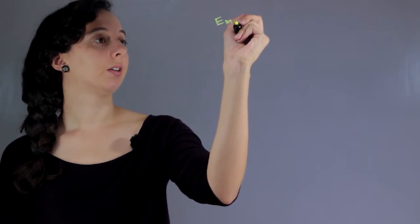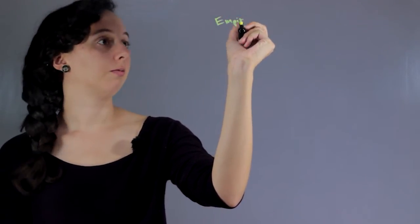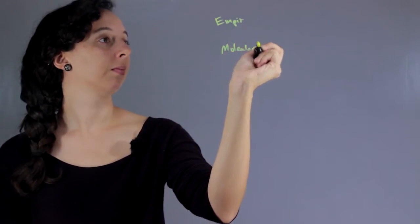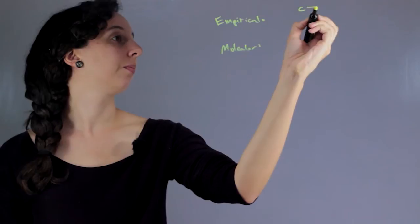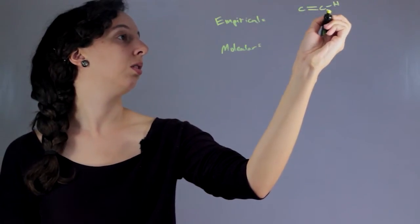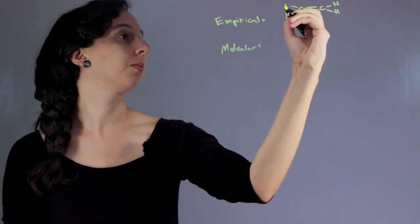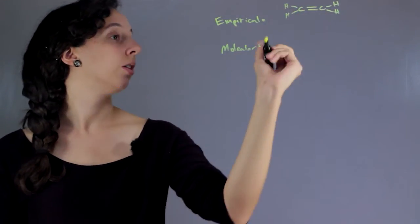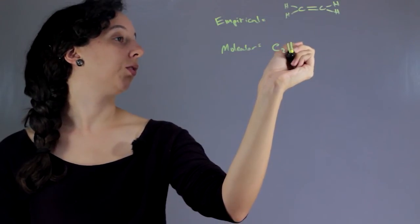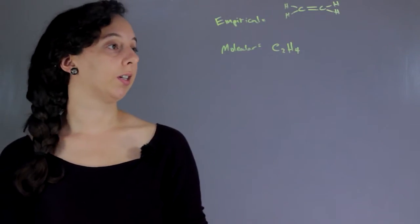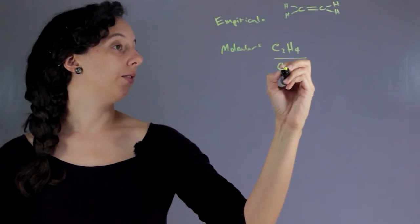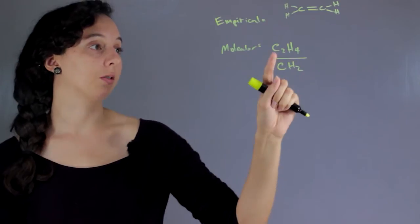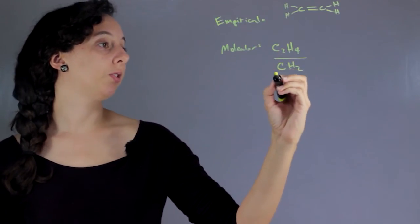Remember that the empirical formula is a little bit different than the molecular formula. So let's take a molecule like this — it has two carbons and four hydrogens. Its molecular formula is just writing down what we see: C2H4. But we can see that we could technically reduce these numbers and divide both by two, giving us CH2, which has the same ratios. The one that's completely reduced is the empirical formula.